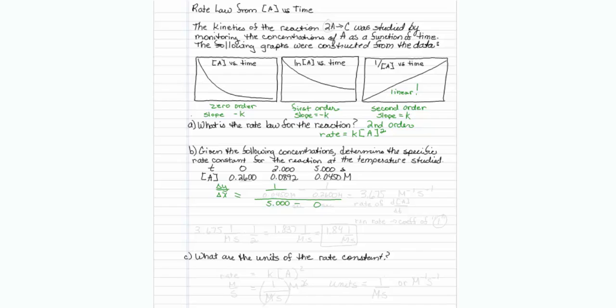Now I need to take the concentration at five seconds and do it the way we plotted it. That would be one over .0450 minus the concentration at no time, which is .2600. So let me put that into my calculator. And my math tells me that the value comes out to be 3.675.